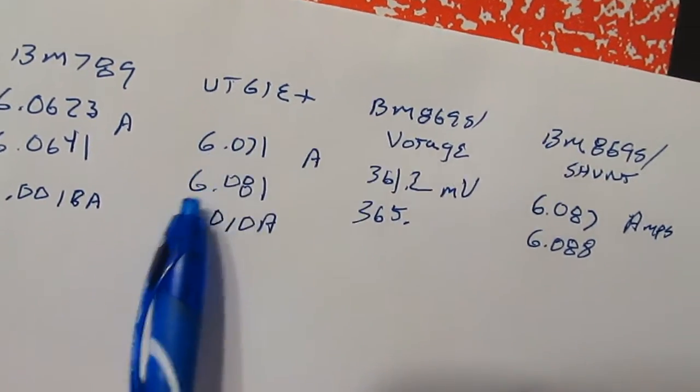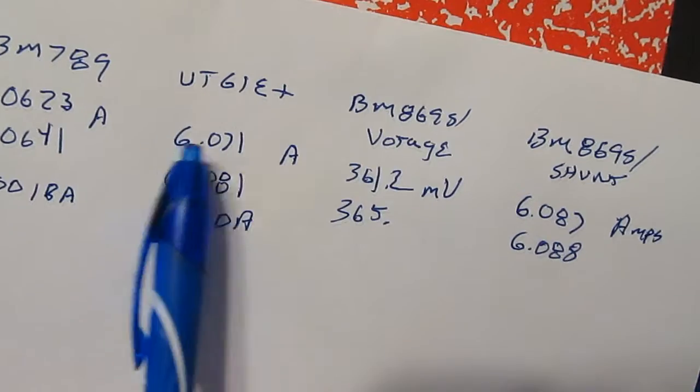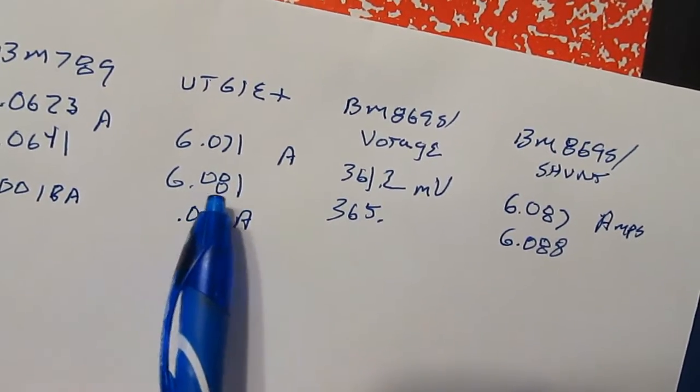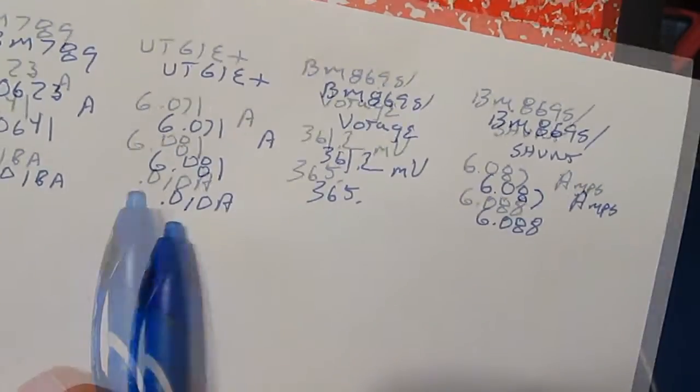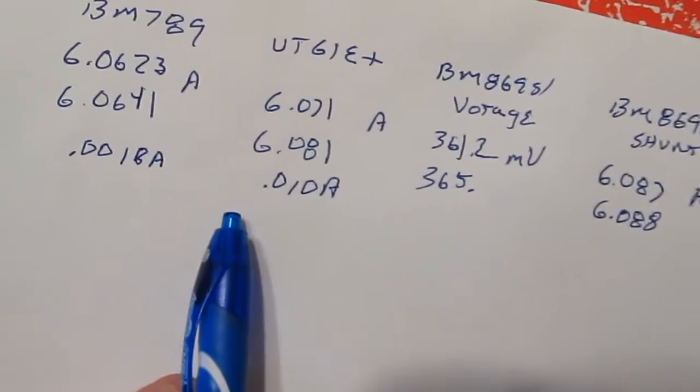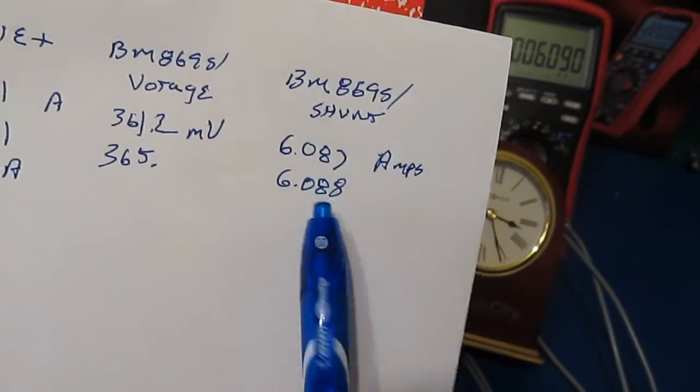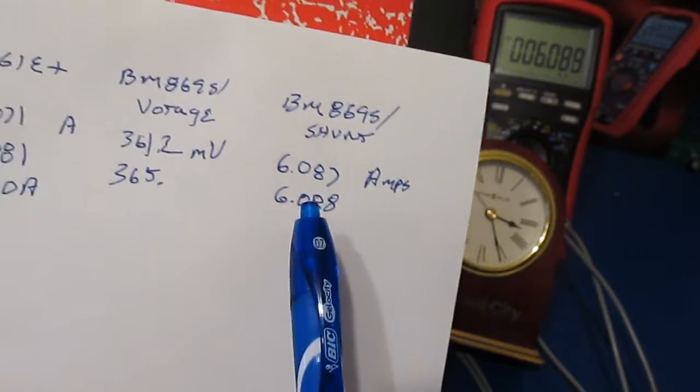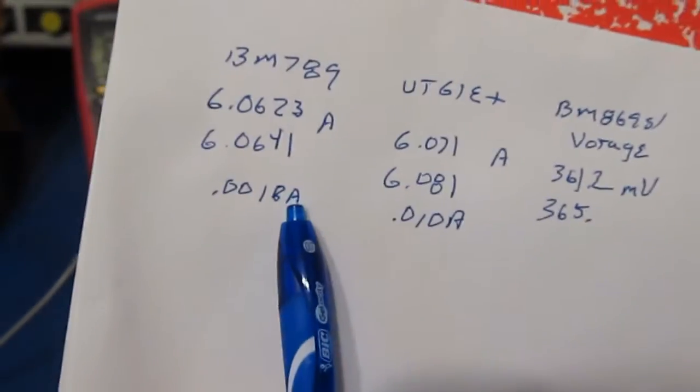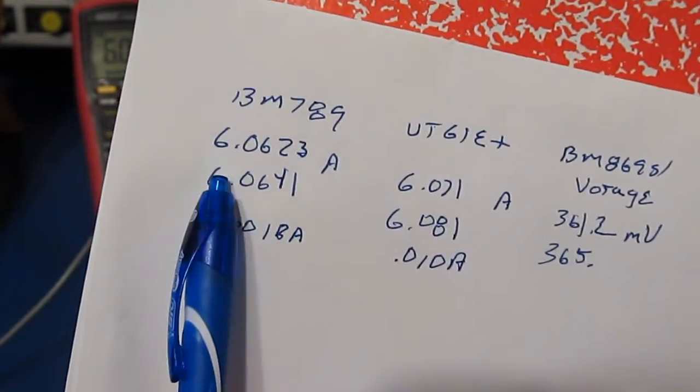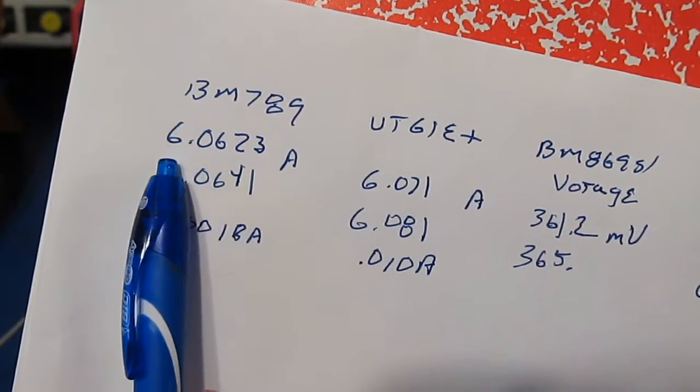Now let's look at the unity UT 61E plus. We've gone from 6.071 to 6.081 amps for a difference of roughly ten milliamps, or roughly ten times higher than what we're measuring with our Bremen along with our external shunt.